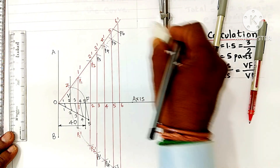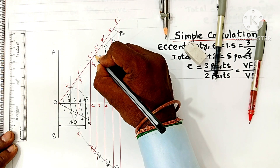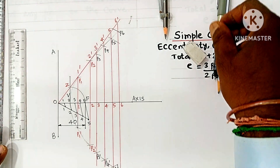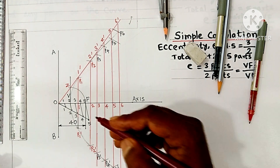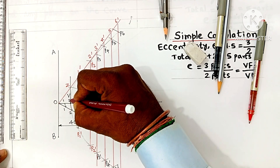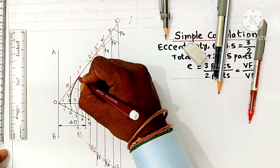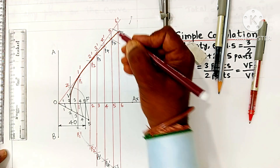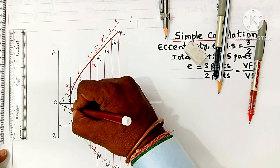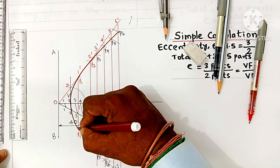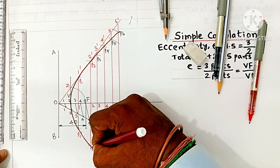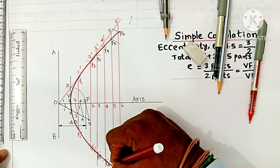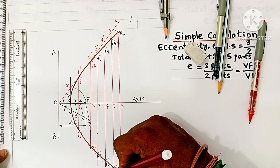Make the hyperbola curve dark using an H or HB pencil. Other construction lines — vertical lines, arcs, directrix, and axis — shall be drawn using a 2H pencil. The final answer, the hyperbola, is to be highlighted using H or HB pencil.